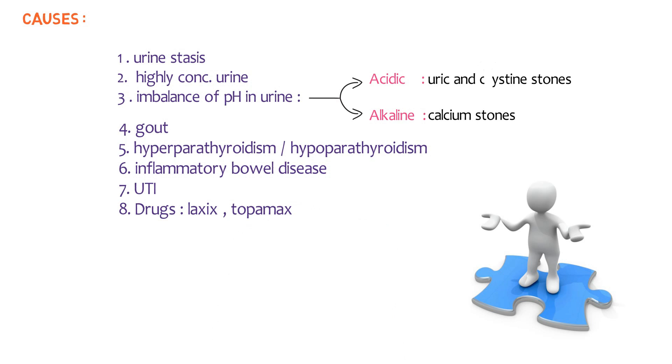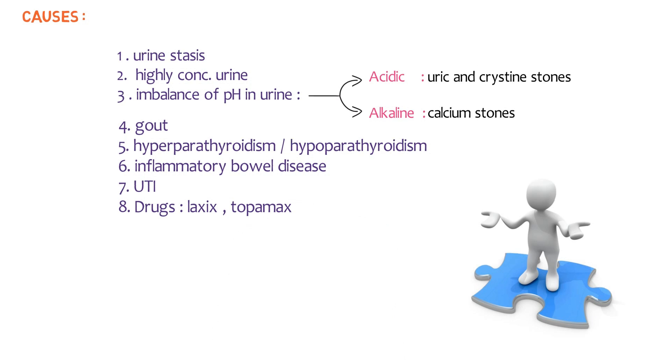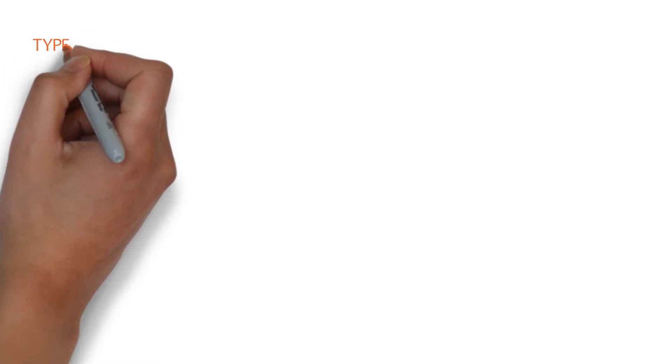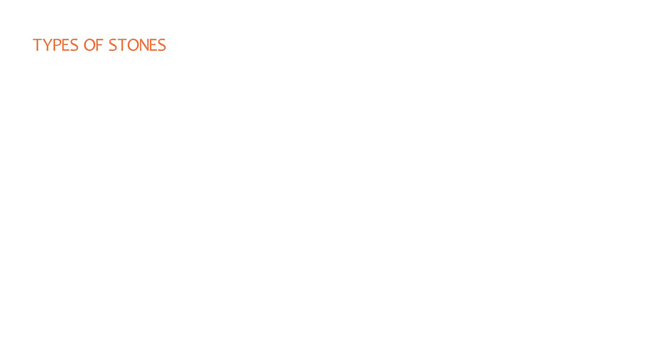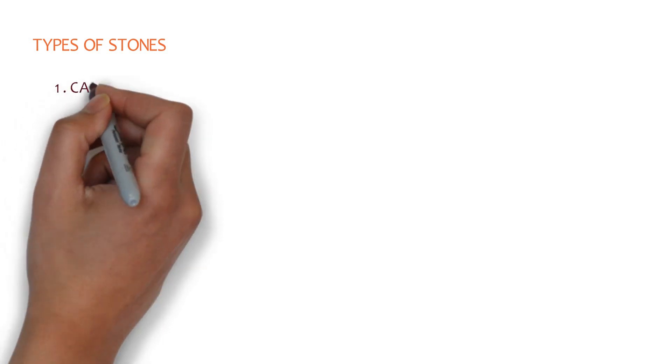Drugs like Lasix and Topamax can be involved. Let's talk about types of stones. Stones are classified on the basis of their location in the urinary system and their composition of crystals.